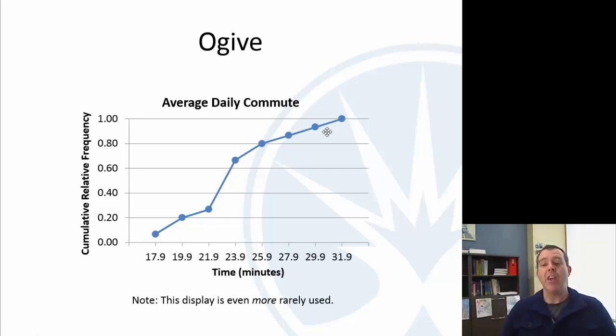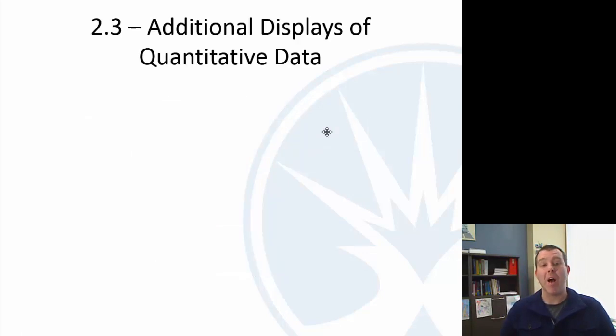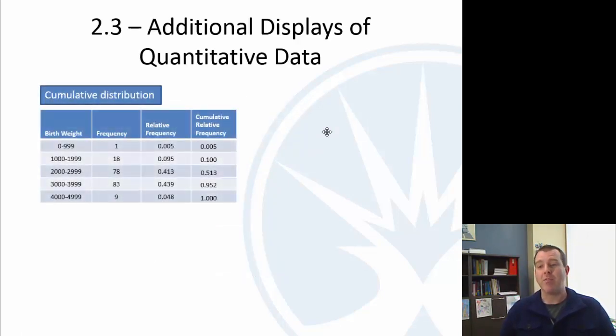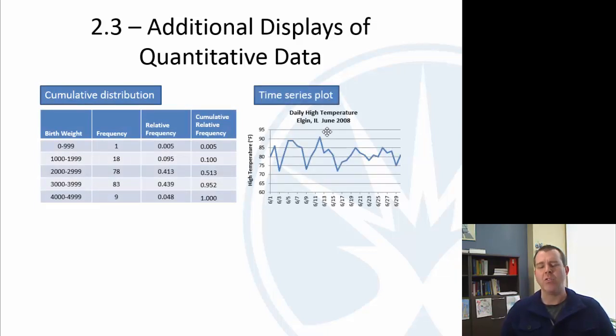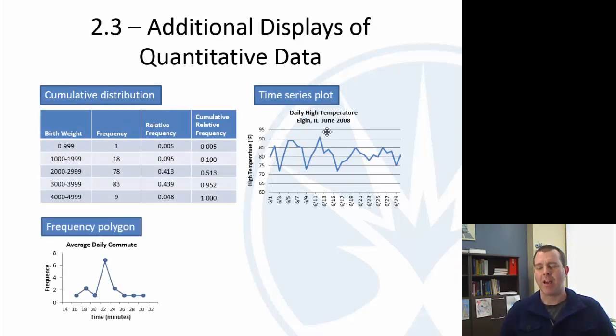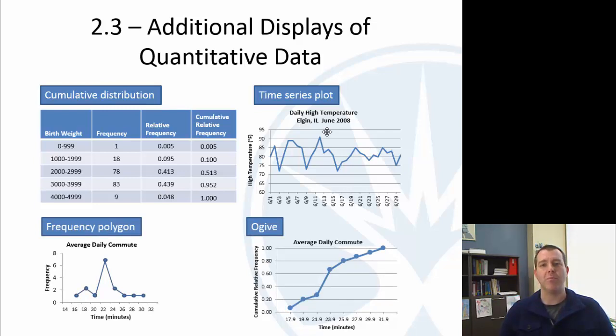So a quick summary here. Cumulative distribution means adding up as we go. We have the time series plot which people are very familiar with. Frequency polygon and ogives are less common, and you're not going to be tested on those but I wanted to at least expose you to them.